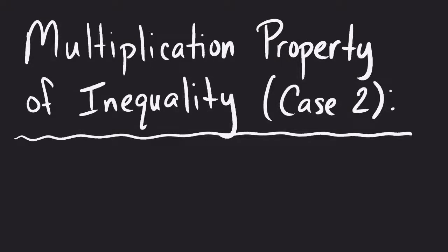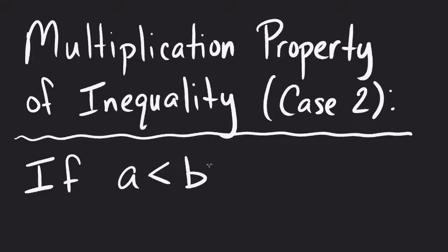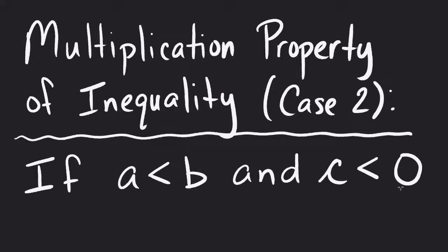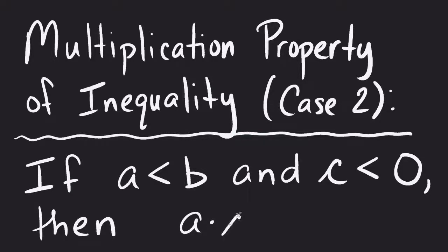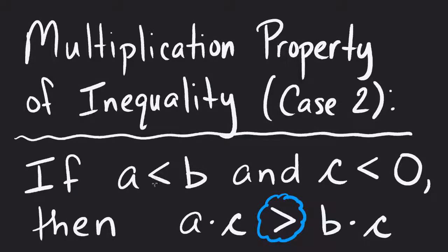Multiplication property of inequality, Case 2. In this case, we still start with some inequality — a less than b or a greater than b — except now c is less than zero, so c is a negative number. This changes things: if that's the case, then a times c will now be greater than b times c. The inequality sign changes direction from its original sign — this was less than, now it's greater than.